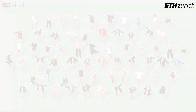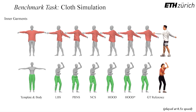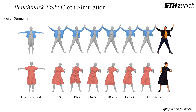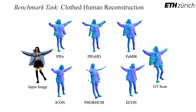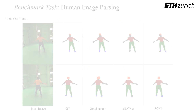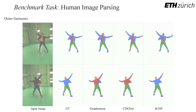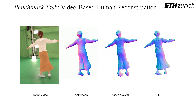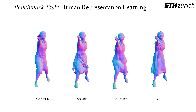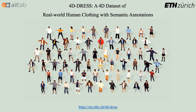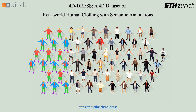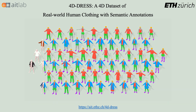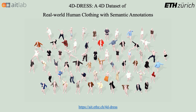To show its potential, we evaluate various benchmark tasks using 4D Dress. For clothing simulation, we use our canonical cloth templates and registered body motions to simulate the full sequence. On clothed human reconstruction tests, we see that existing methods fail on challenging loose garments, and similarly for the human image parsing task on multi-view captured images. We also evaluate video-based human reconstruction methods on our dataset, and design a new benchmark for evaluating the human representation learning task. This demonstrates that 4D Dress is not only the first real-world 4D clothing dataset, but also a challenging benchmark for clothing simulation, reconstruction, and other related tasks. We believe 4D Dress can support a wide range of tasks and foster future research.